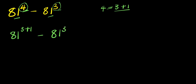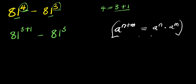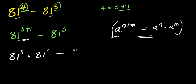Now, if you have a to the power of n plus m, this equals a to the power of n times a to the power of m. I'm going to apply this identity, so I'm going to have 81 to the power of 3 times 81 to the power of 1, minus 81 to the power of 3.